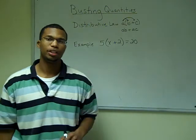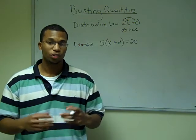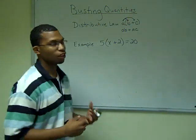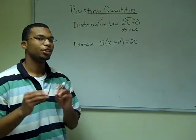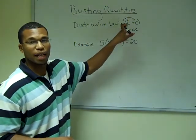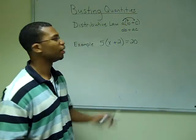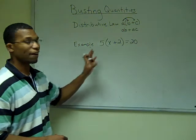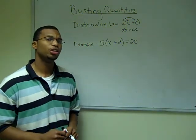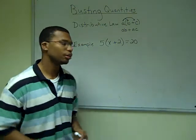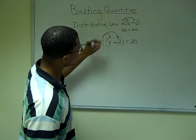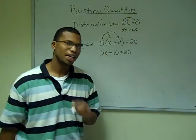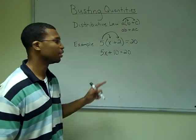Now I'm going to show you how to get rid of parentheses. Sometimes in equations you'll get problems that have parentheses, so this segment is dedicated to showing you how to eliminate them. The law we'll use is the distributive law, which states that a times the quantity (b + c) equals a·b + a·c. Applying that to our example: 5 times the quantity (x + 2) = 20. Distributing gives us 5x + 10 = 20.